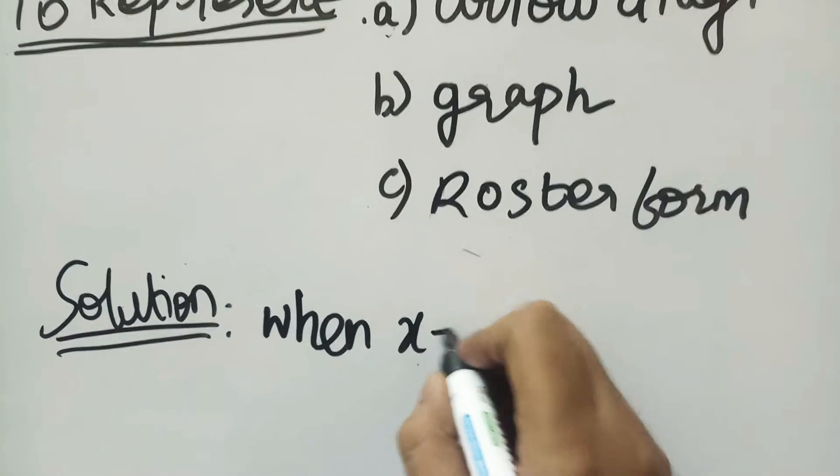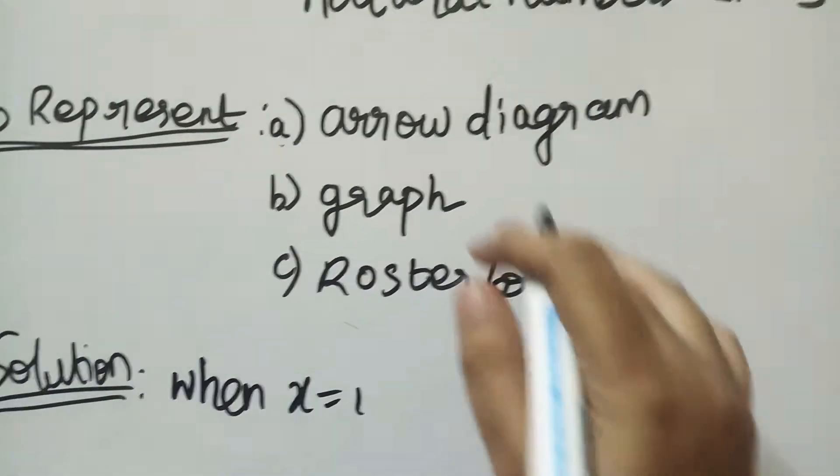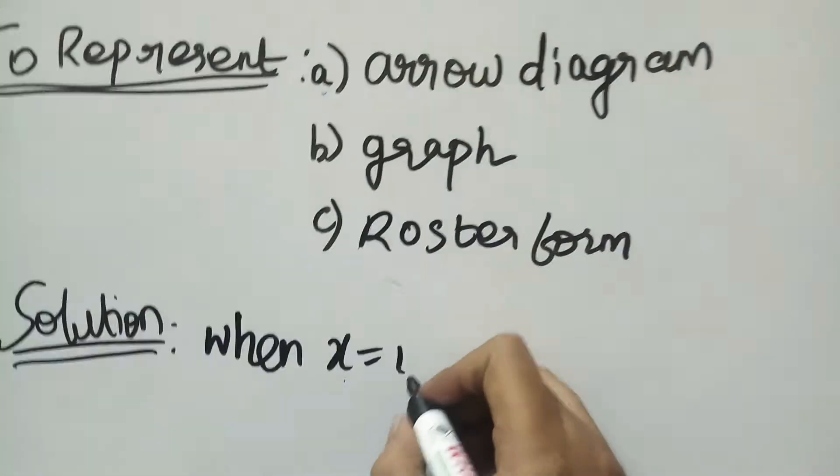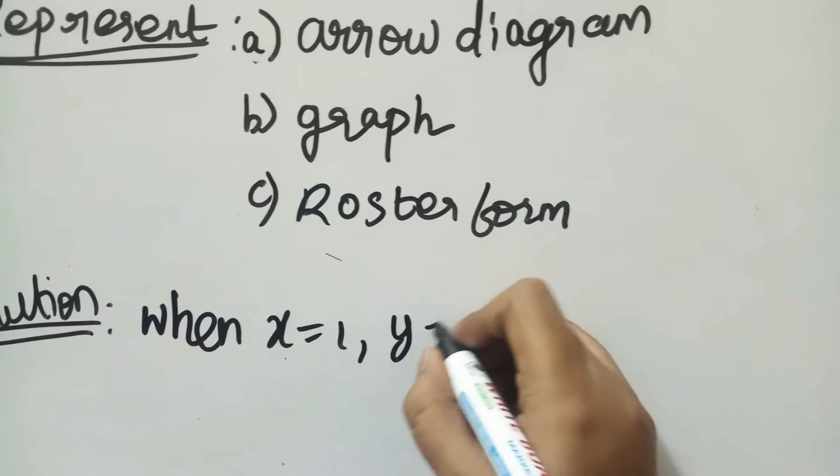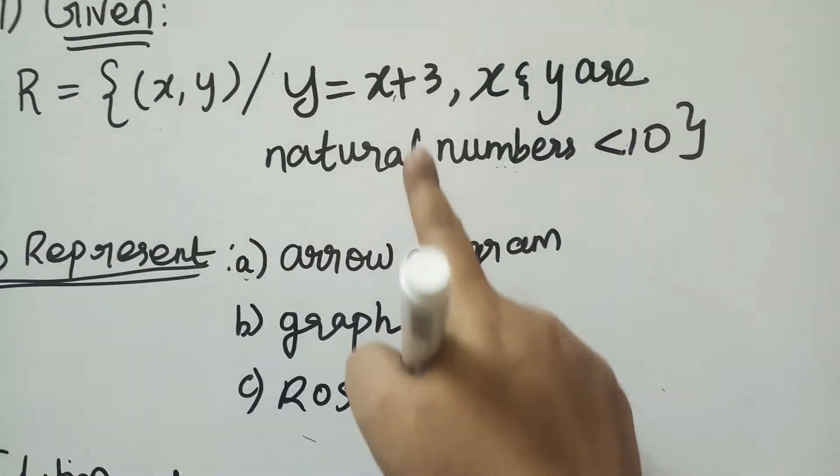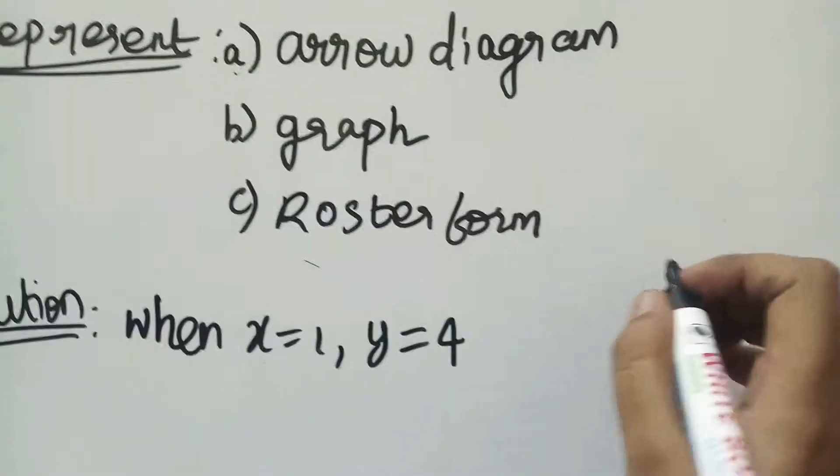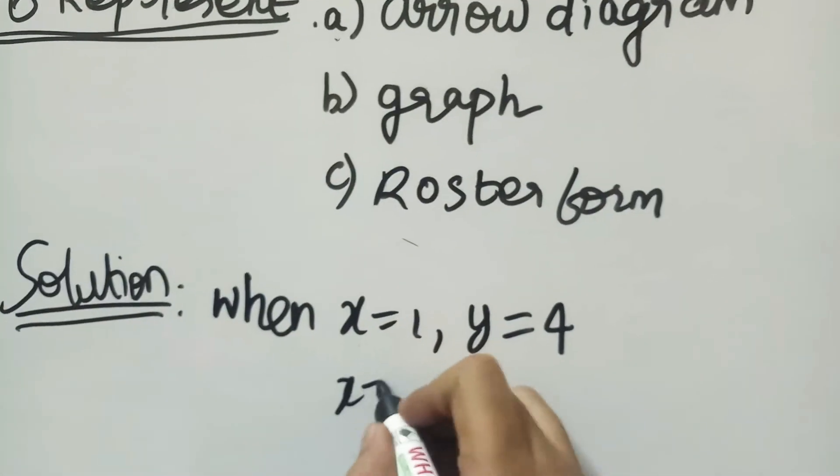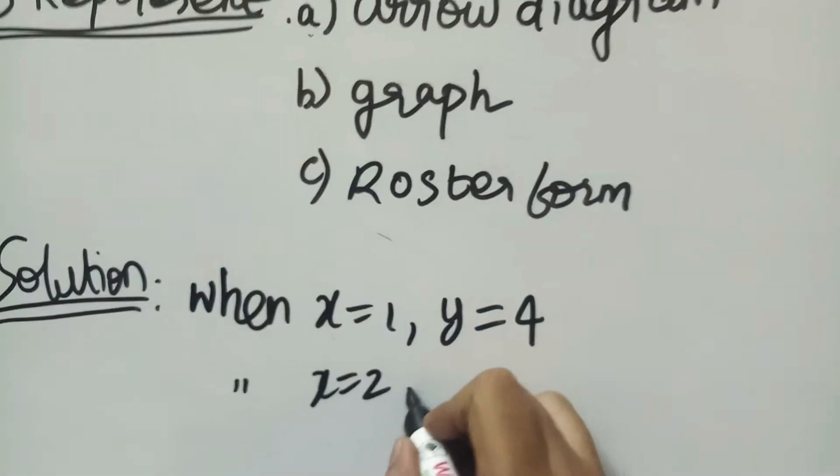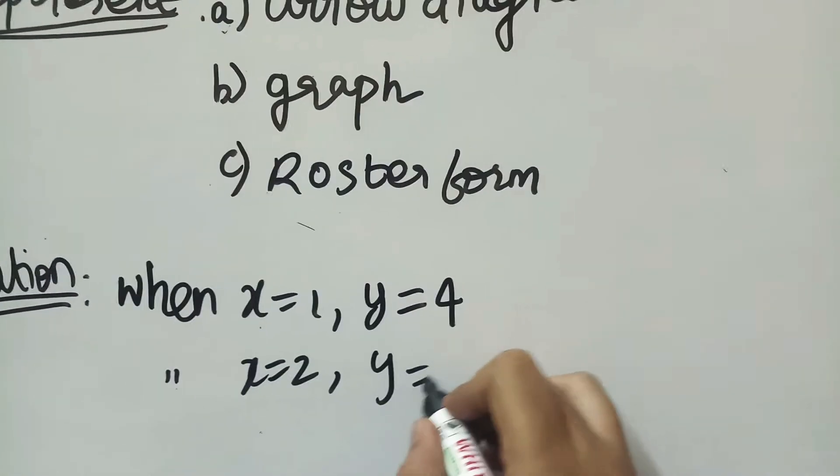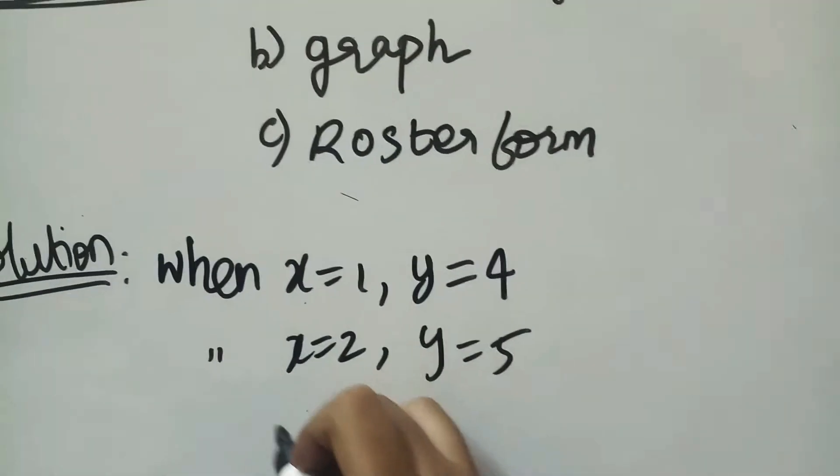When x is equal to 1, we already know that x and y are natural numbers. So 1 to 9, x is equal to 1, y is equal to x plus 3. So 1 plus 3 is 4. It belongs to natural numbers. When x is equal to 2, y is equal to 2 plus 3, which is 5. It belongs to natural numbers less than 10.